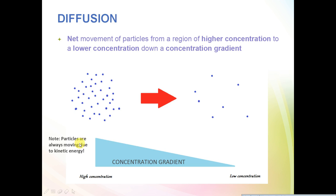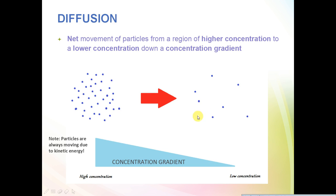Particles are always moving because they've got something called kinetic energy. If you have a concentration gradient like so, there will be a net movement of particles from the region of higher concentration to lower concentration. It does not mean that no particles will be moving from the right-hand side to the left-hand side — they will — but more particles will be moving in the opposite direction, from left to right, just to equalise that concentration.